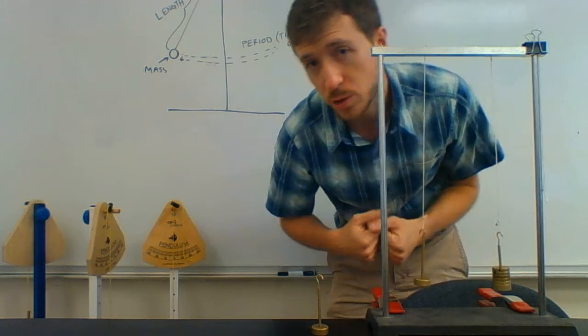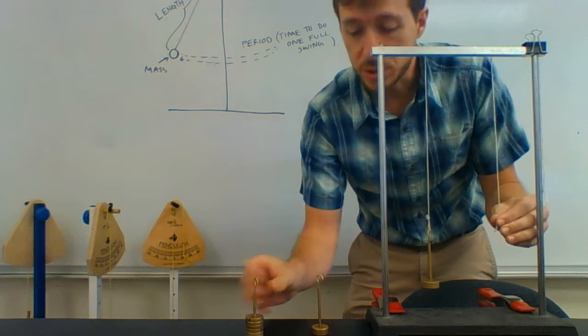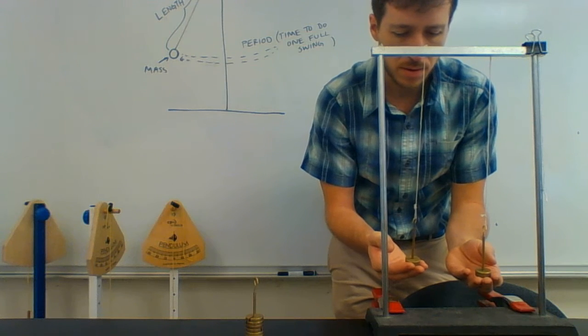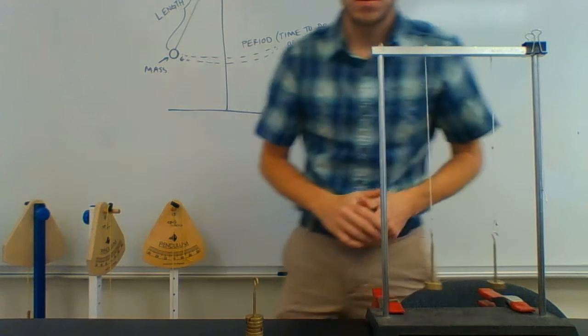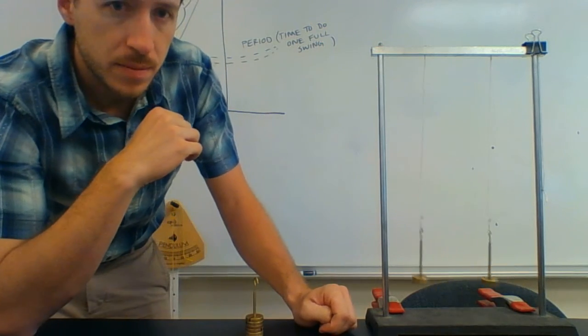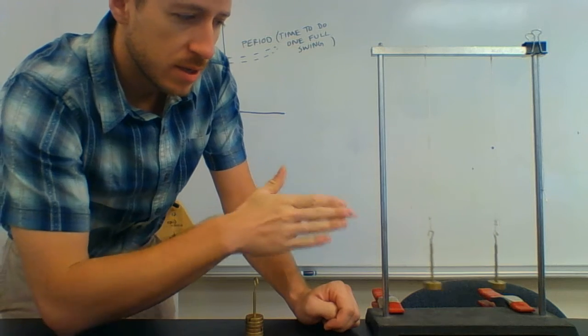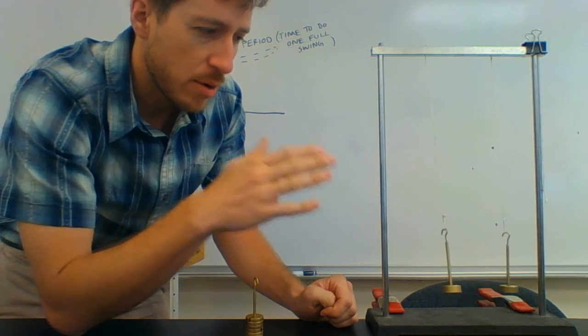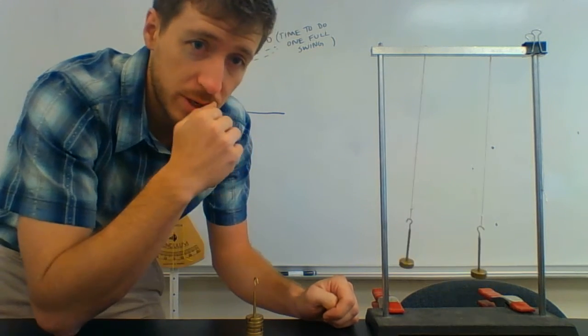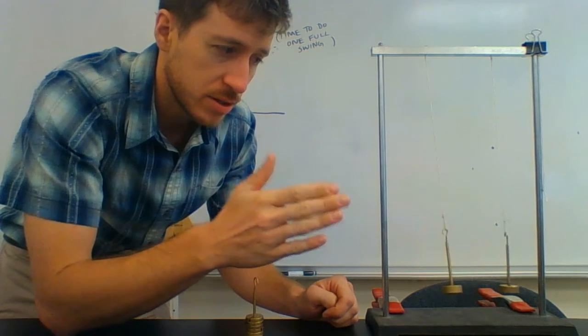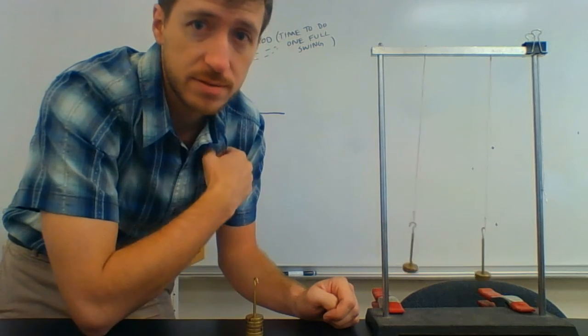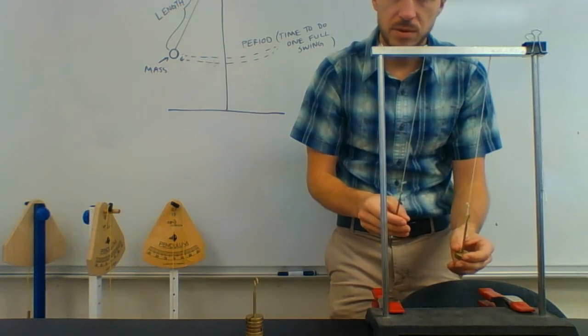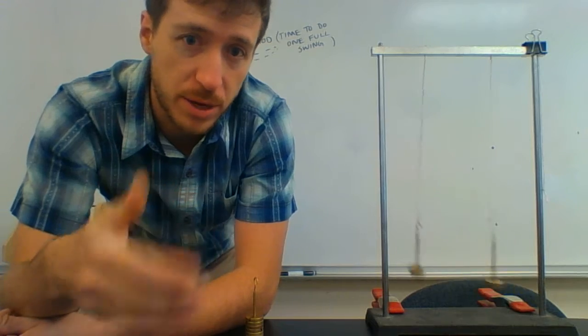So mass doesn't actually affect how long it takes a pendulum to swing back and forth. We can change the mass and it's still going to take the same amount of time to swing back and forth. So let's try the next one. Let's try amplitude. Now if I pull them back to different lengths and let them go, you can see that they're swinging differently. They have different speeds. One swinging farther, one swinging shorter. But the amount of time it takes them to swing back and forth one time is still in sync. They're still swinging with the same period even though this one's moving faster, which is kind of cool.